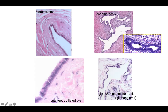Cutaneous ciliated cyst also has rectangular cells with mucous cytoplasm toward the white space — notice the feathery ciliated border. Congenital cystic adenomatoid malformation has cells with very round nuclei, often in just one or two layers.